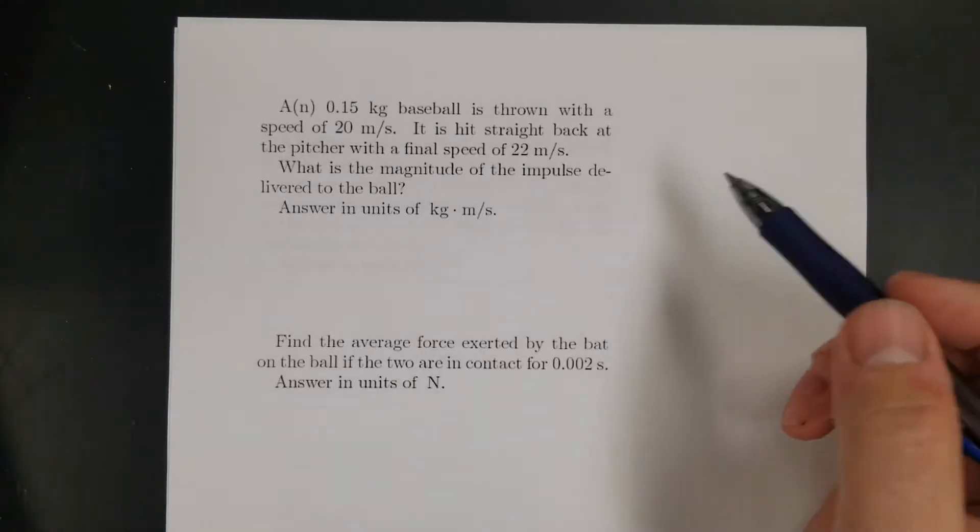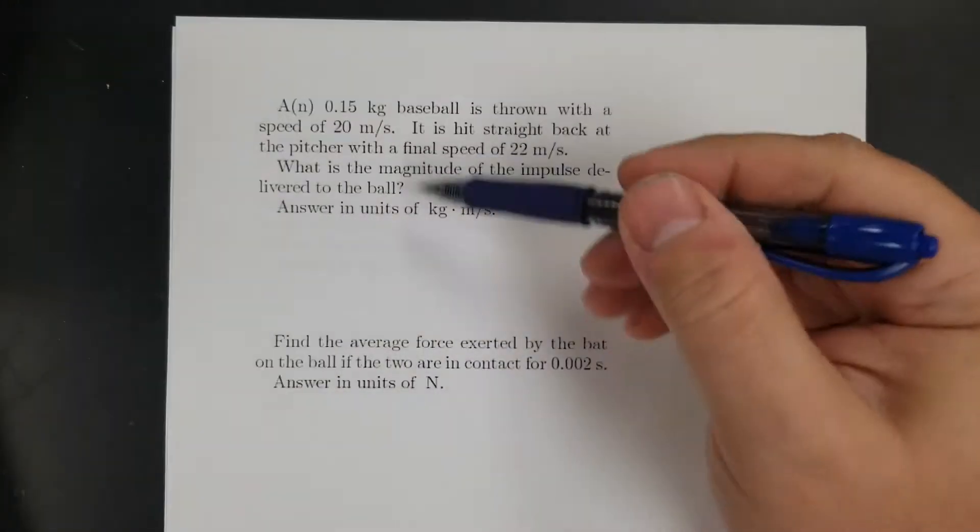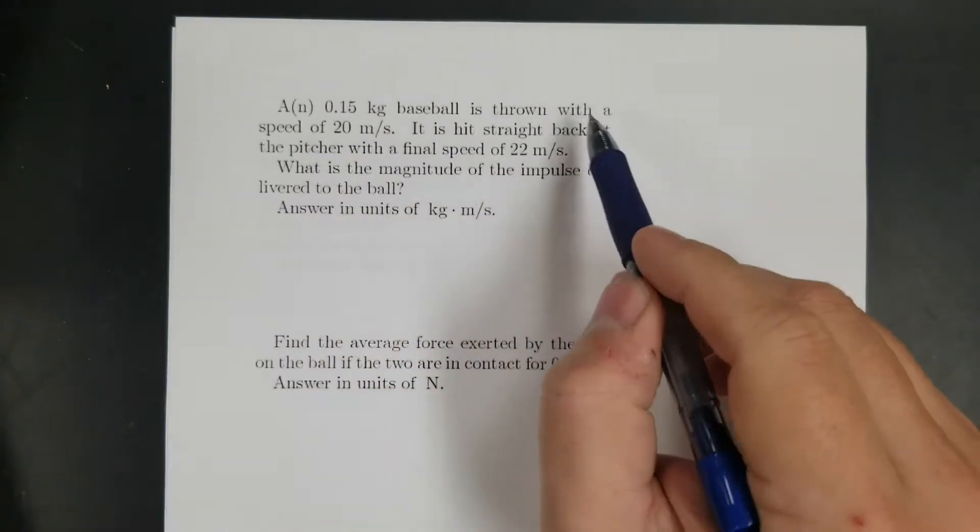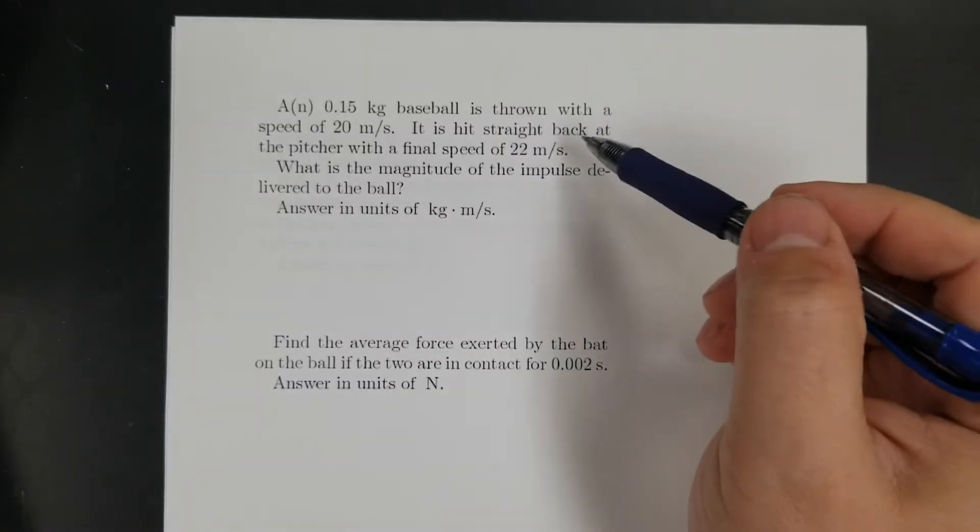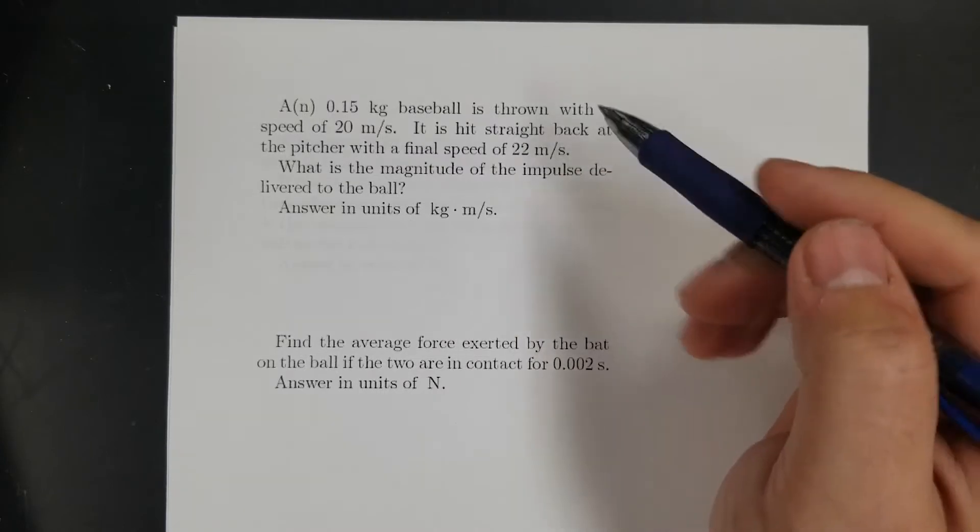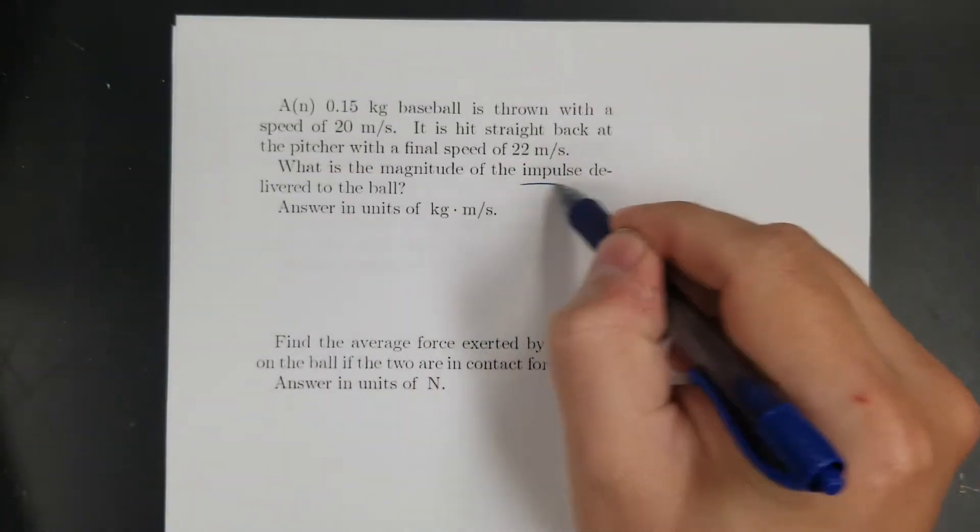Okay, so let's solve some of these momentum problems. So here's my first one. It's two parts. So I got a baseball that's thrown 20 meters per second. It's hit straight back with a final speed of 22 meters per second. What's the magnitude of the impulse delivered to the ball?